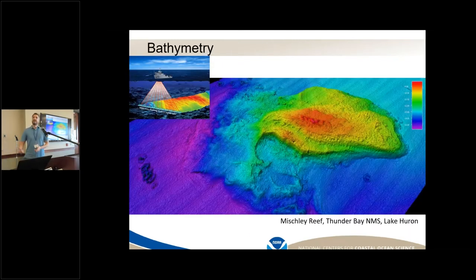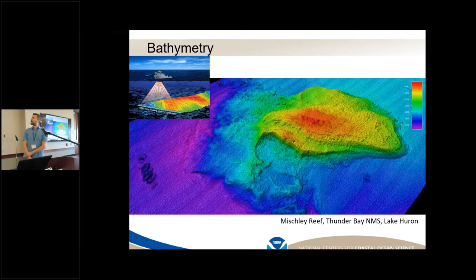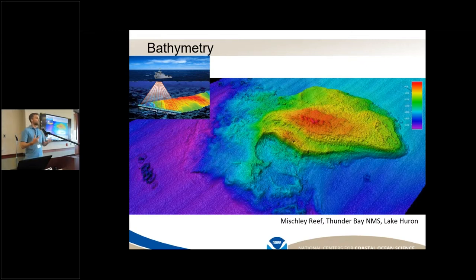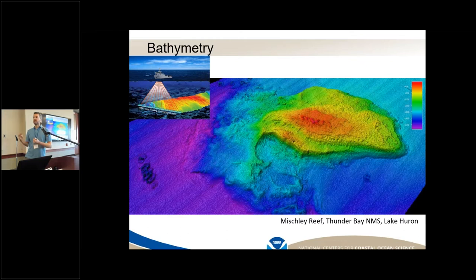We're all familiar with a map like this — a map of elevation. This is for Michley Reef, which is in Thunder Bay National Marine Sanctuary. We used the Kongsberg EM2040 to map the elevation and collect bathymetry and backscatter at one-meter resolution, which was really useful. It helped us understand the reef, its shape, its elevation, and whether it was a hazard to navigation. But there's a lot more information in this map that can still be extracted with a bit more attention and effort.